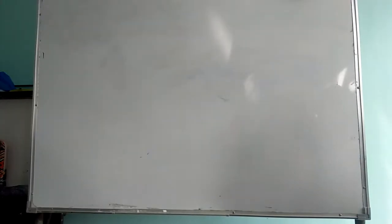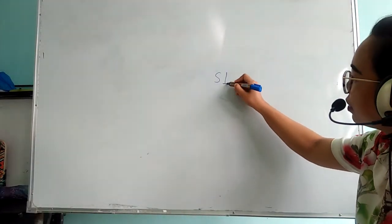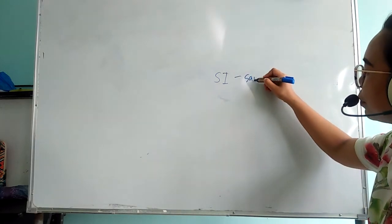If you are going to use systematic sampling as your probability sampling technique, the first step is to calculate your SI. SI means sampling interval.